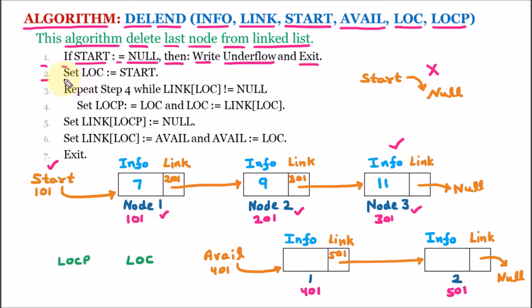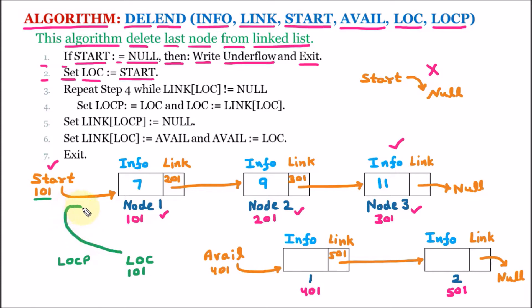In line 2, we set LOC equal to start. The value of start is 101, so the location value will be 101. That means LOC is now pointing to node 1.